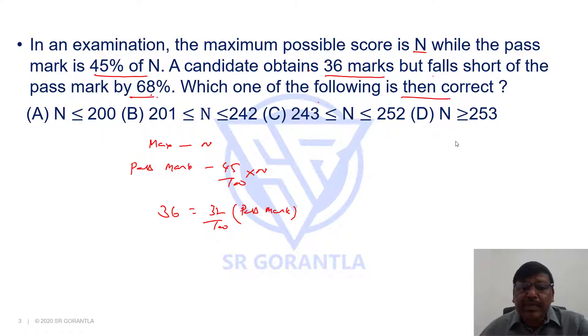Why do we say that? Because 68% is less. Suppose if someone falls short by 10%, the candidate obtains 90% of the required score. If someone falls short by 20%, the candidate obtains 80% of the required score. Now that the candidate falls short of the pass mark by 68%, the candidate obtains only 32% of the pass mark. So, this 36 marks is 32% of the pass mark.